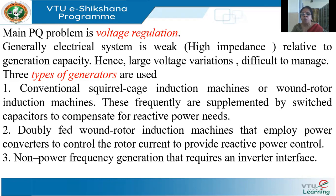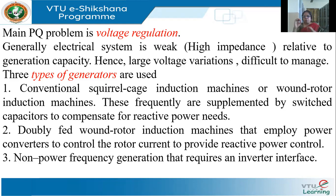Recently, doubly fed induction machines — called DFIGs (doubly fed induction generators) — are becoming popular. They use power converters to control the reactive power. Non-power-frequency generation can also be used, which requires an inverter interface to connect to the grid. Wherever we have wind farms, there are power electronic devices present, and apart from voltage regulation, these can also cause harmonic problems.